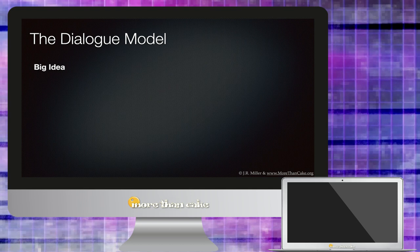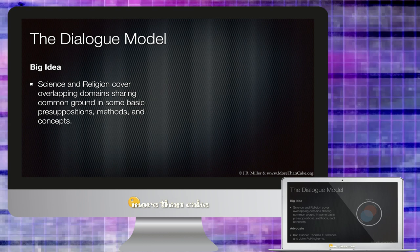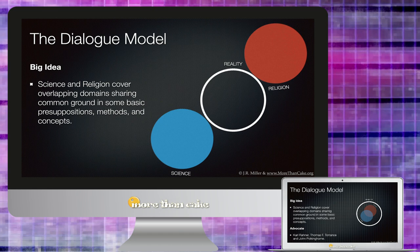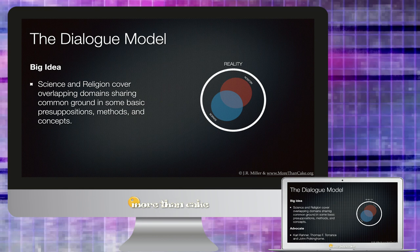The third model we can look at is called the Dialogue Model. Now the big idea here is that science and religion are said to cover overlapping domains, sharing common ground and some basic presuppositions, methods, and concepts. Now this doesn't mean certainly that they share everything in common, but it does allow for some area of overlap that these two disciplines can speak to the one reality.